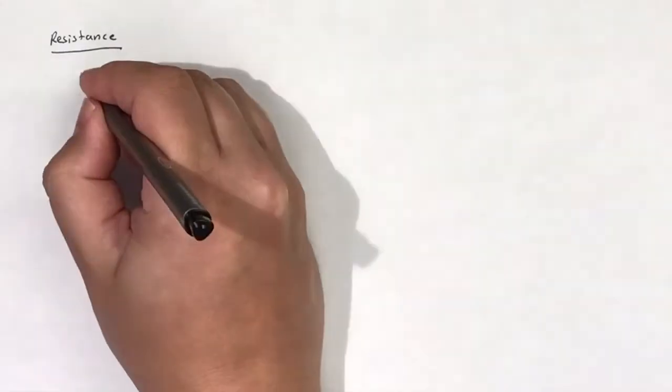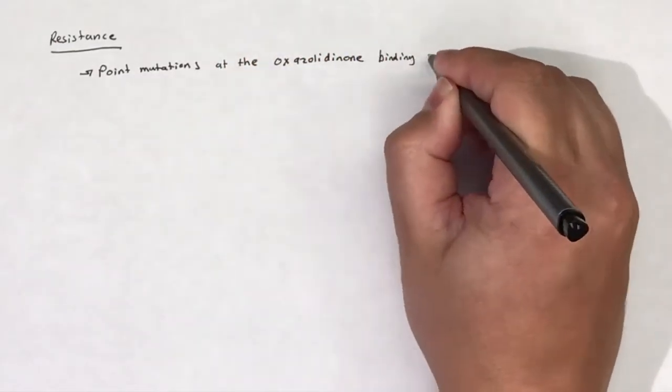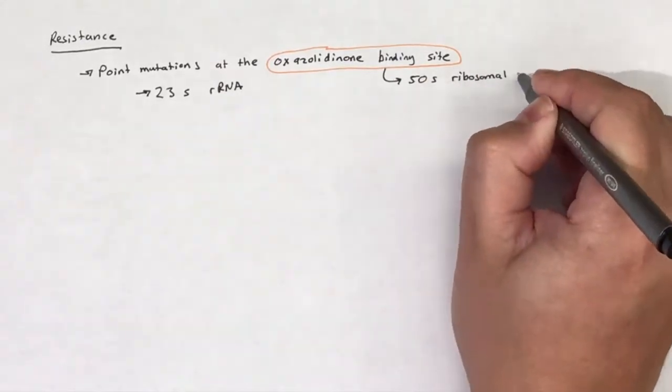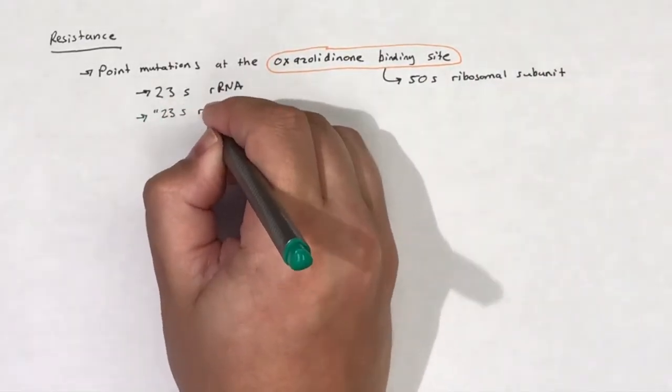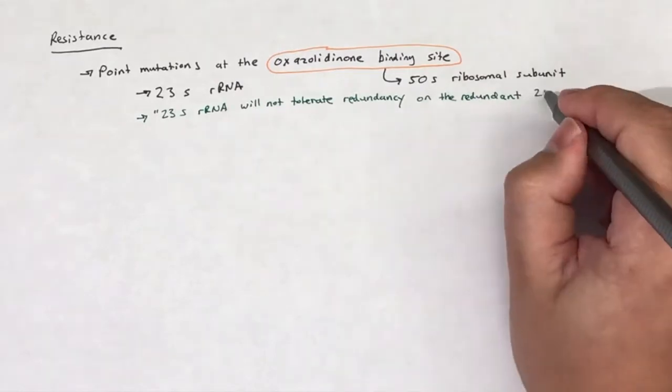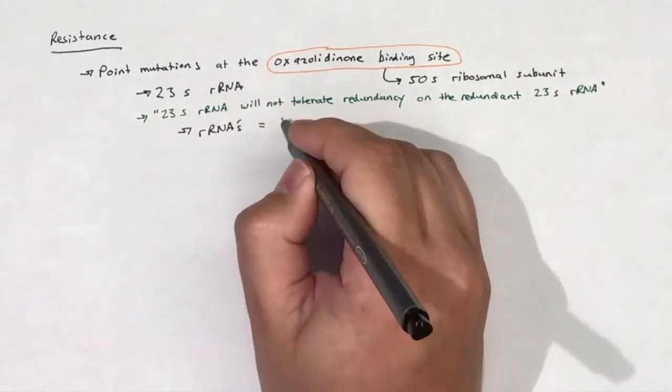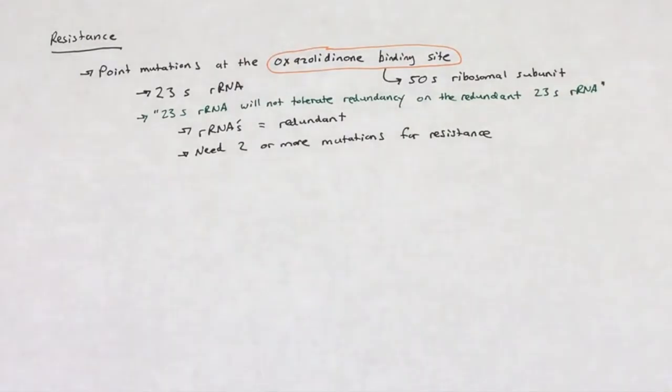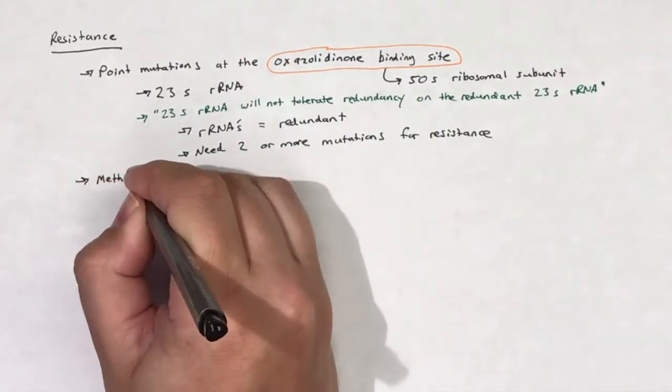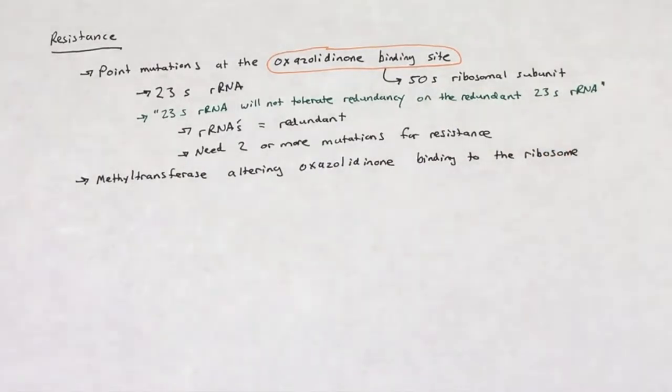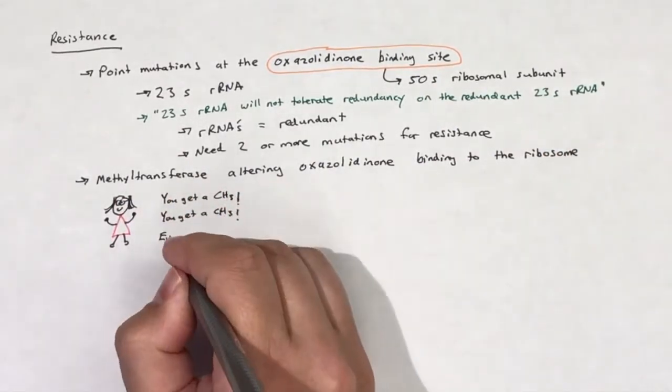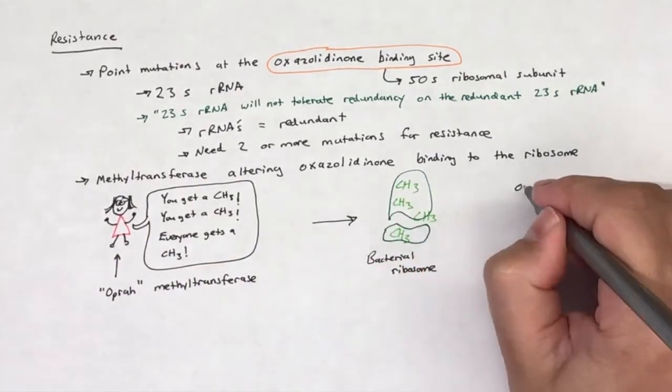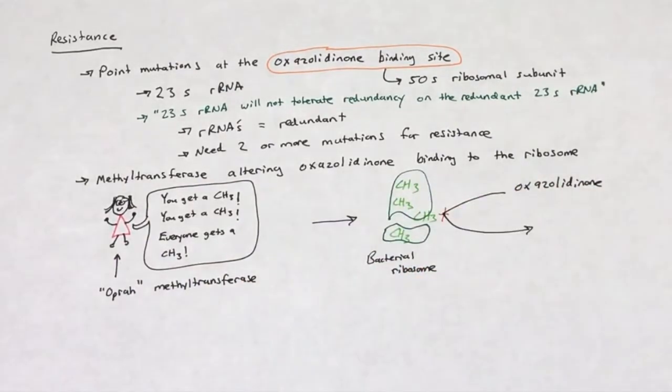Resistance to oxazolidinones is primarily due to point mutations on the 23S rRNA that makes up the oxazolidinone binding site on the 50S ribosomal subunit. Ribosomal RNA is pretty redundant and it takes mutations on two or more 23S rRNAs to confer oxazolidinone resistance. Other mechanisms of resistance include a methyltransferase that can modify the ribosome and alter oxazolidinone binding. The concerning bit about this mechanism is that it is transferable between bacteria.